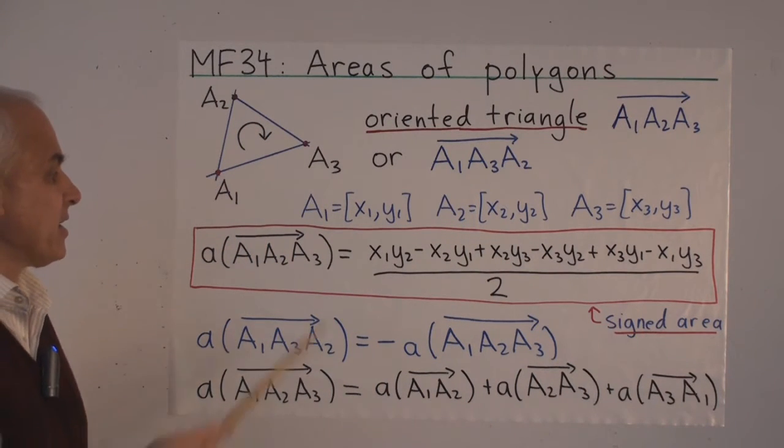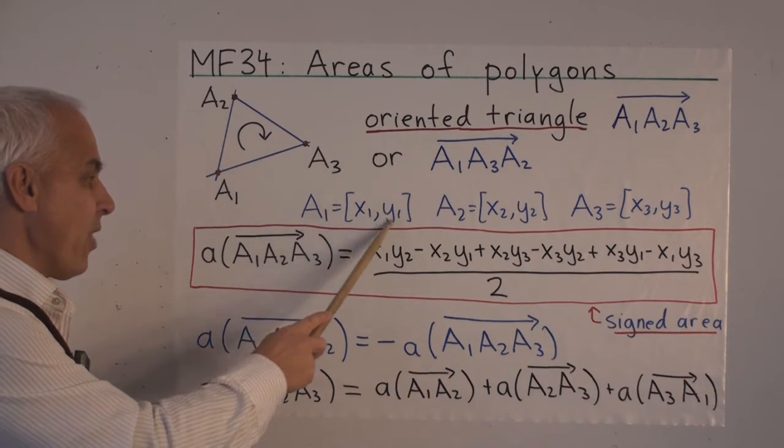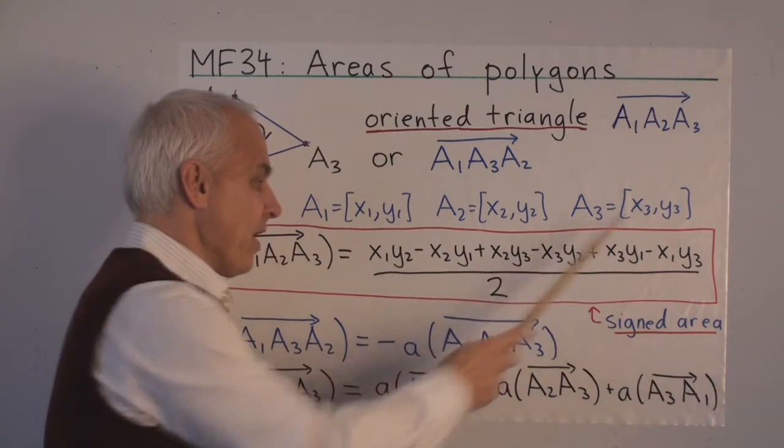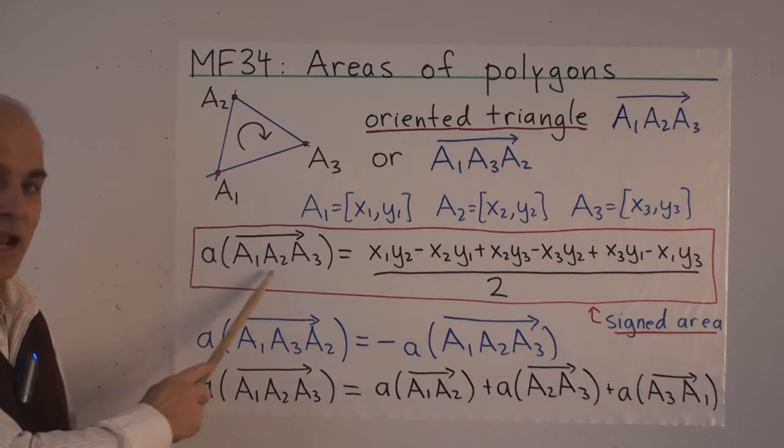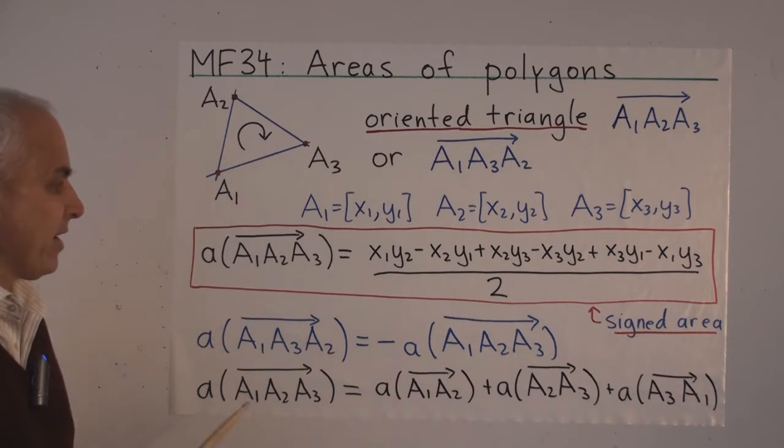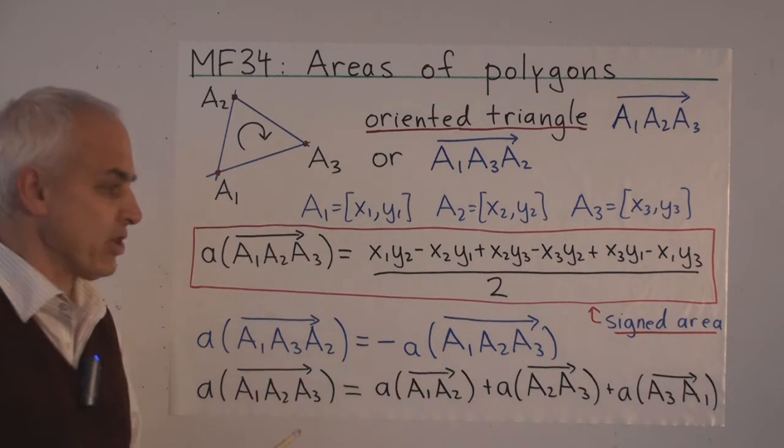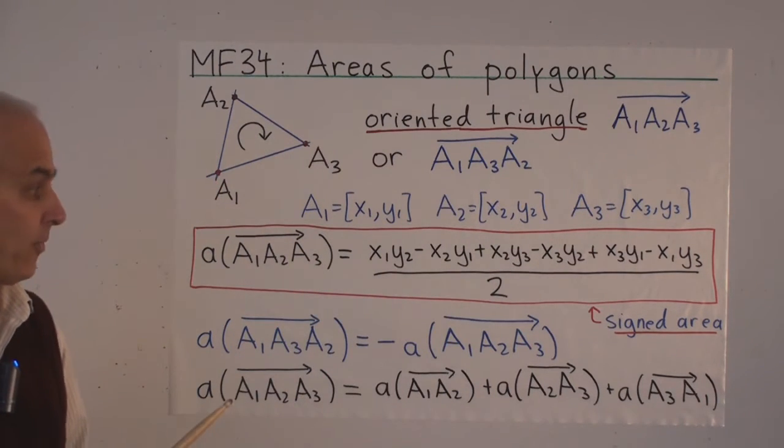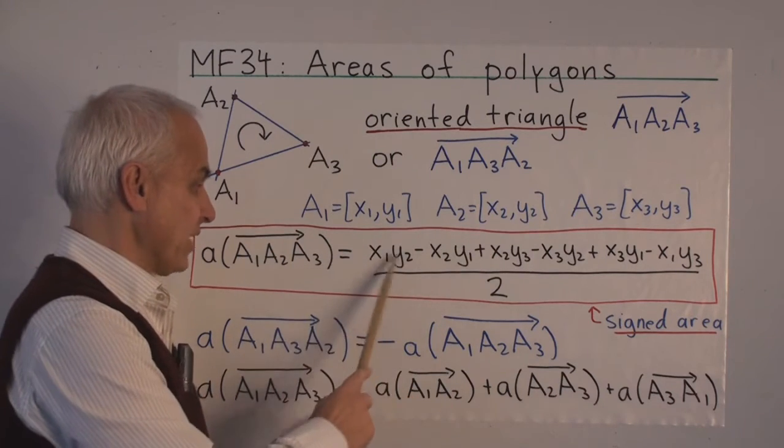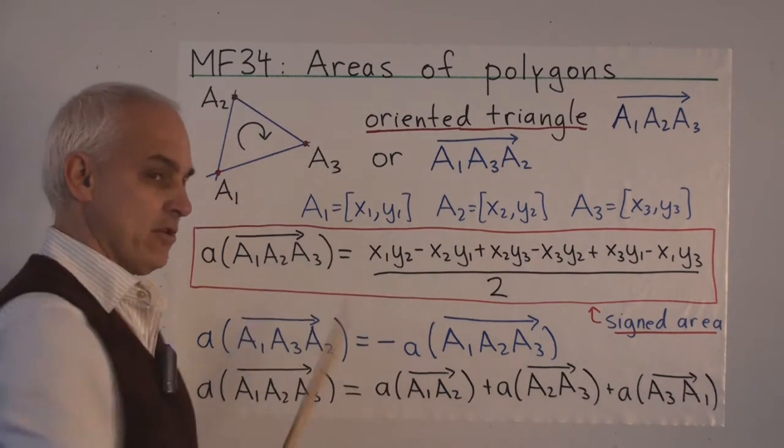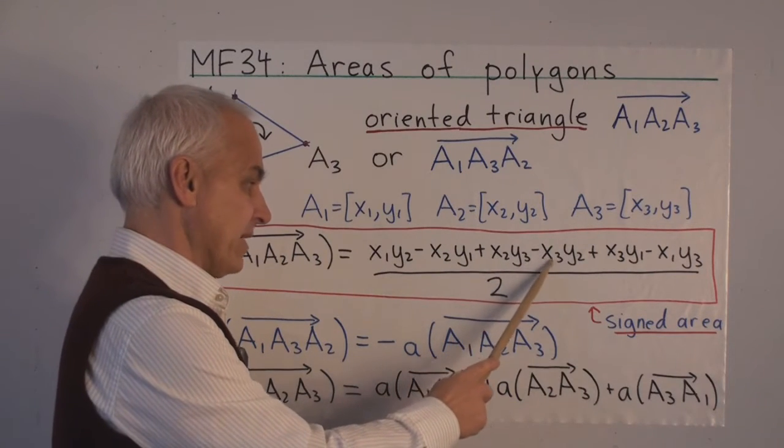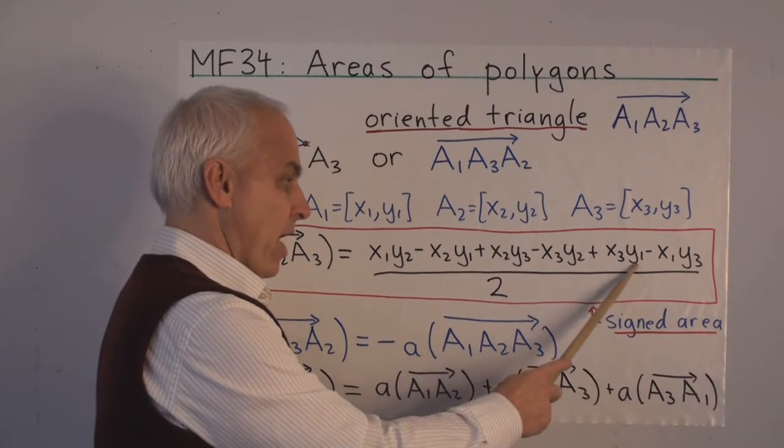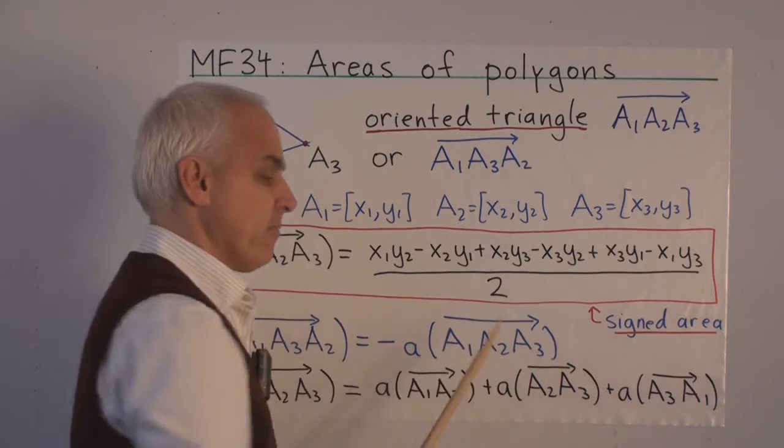Now suppose that we have points A1 with coordinates X1, Y1, A2 with coordinates X2, Y2 and A3 with coordinates X3, Y3. Then the signed area of the oriented triangle A1, A2, A3 is given by this expression. It involves the coordinates in a cyclical pleasant way involving six terms. The first two terms X1, Y2 minus X2, Y1 only depend on these two points. The next two terms X2, Y3 minus X3, Y2 only depend on those two points. And the last two X3, Y1 minus X1, Y3 only depend on these two points.